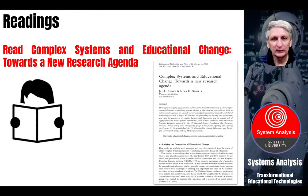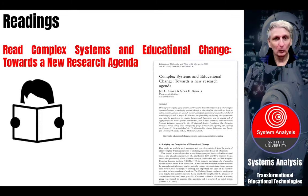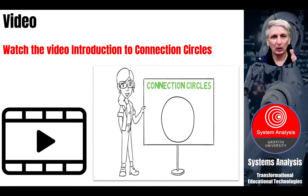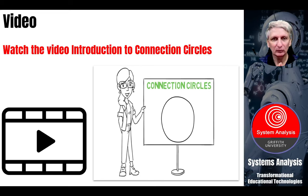Next, I'd like you to read the text on complex systems and educational change towards a new research agenda — essentially looking at how we can use systems thinking to support research and better understand what we're researching by better understanding the systems involved. Now we're going to get to an applied aspect of systems thinking. Next session we're going to create a model of your educational system, but first we need to identify the elements of the system that are going to be important and how they relate to one another. One of the most effective ways of doing this is through a tool called connection circles, so we're going to look at a little video clip.